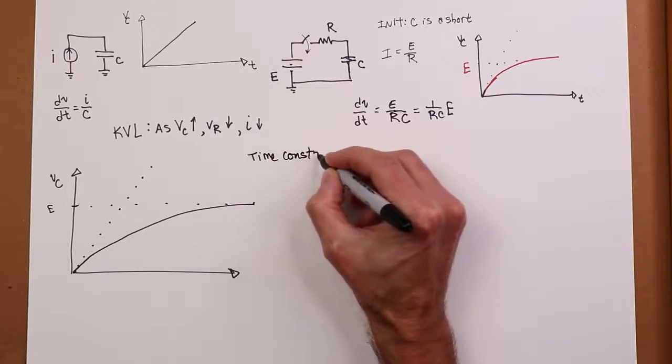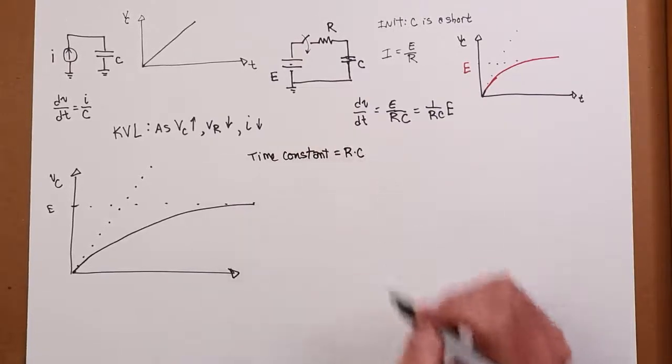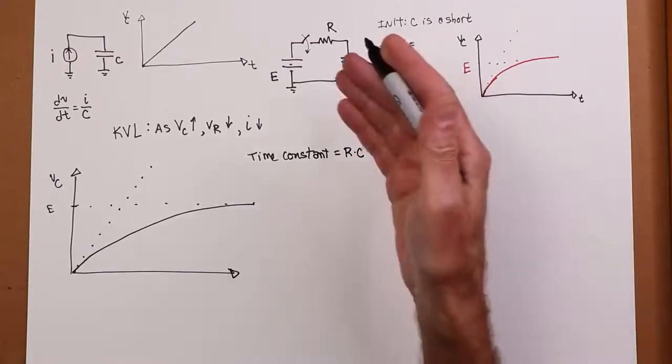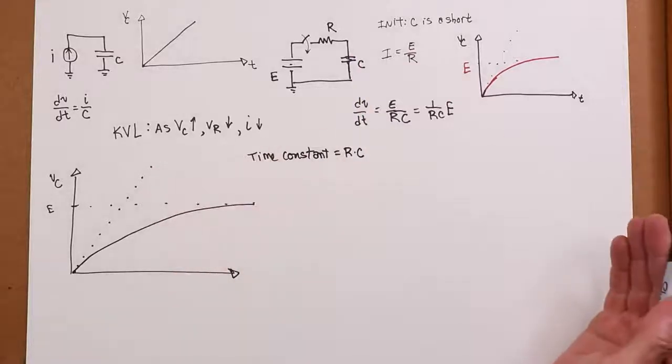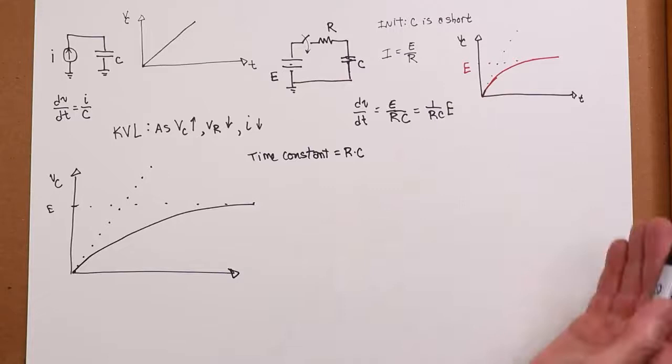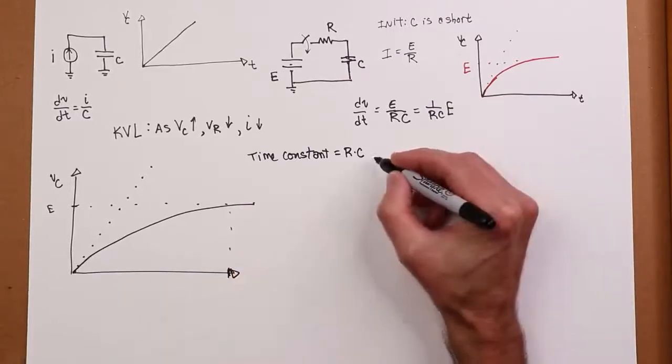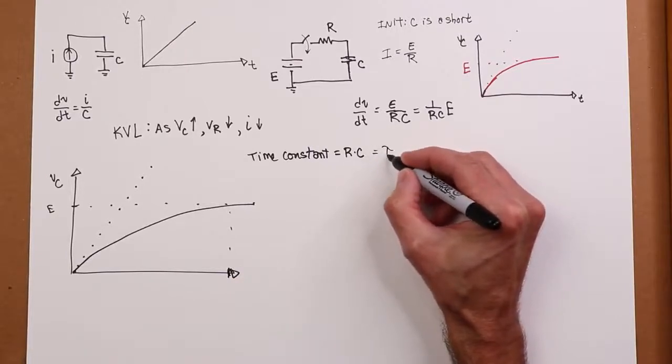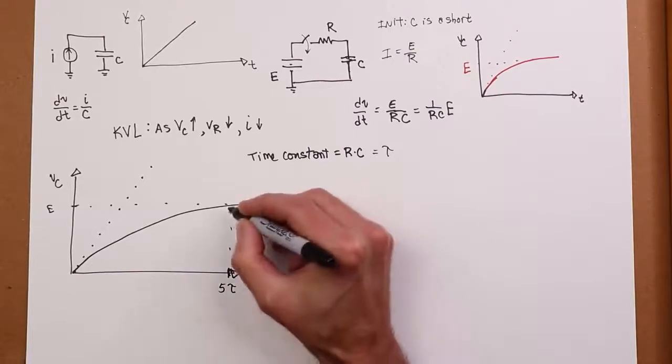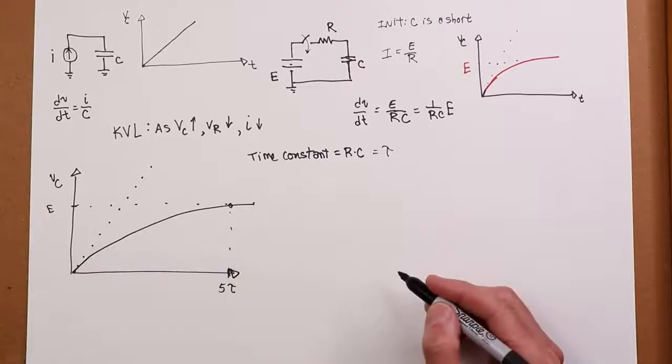So we can say that a time constant is simply equal to R times C. R in ohms, C in farads. Obviously, big capacitors, big resistors are going to give us long time constants. Time constants can be in the nanoseconds. They can be in the seconds. It all depends on the values that we're using. But when I get out to five of these things, and we use tau to indicate time constant, when I get out to five tau, we can say we're virtually there. We're virtually at 100%. That's where we wind up.